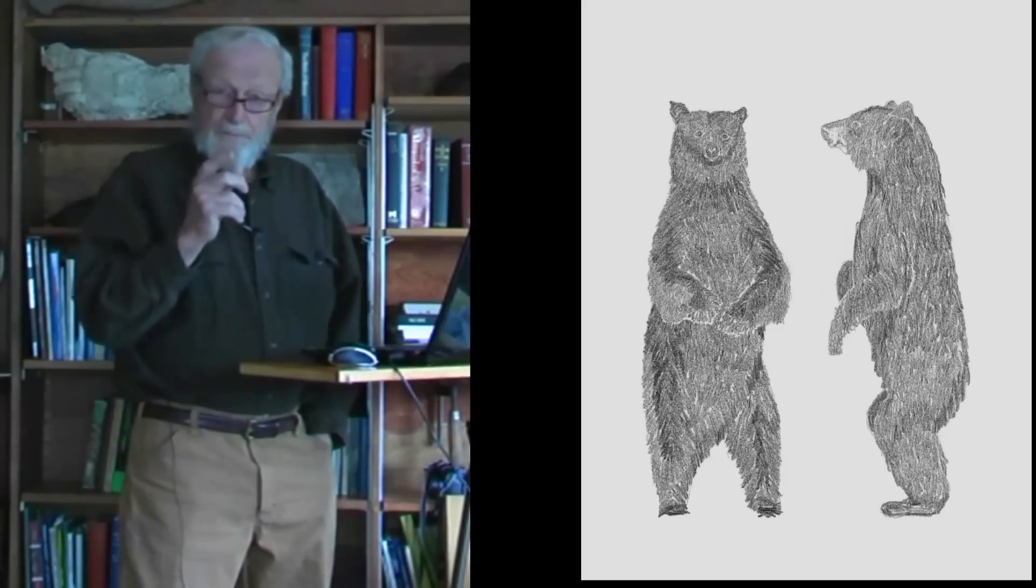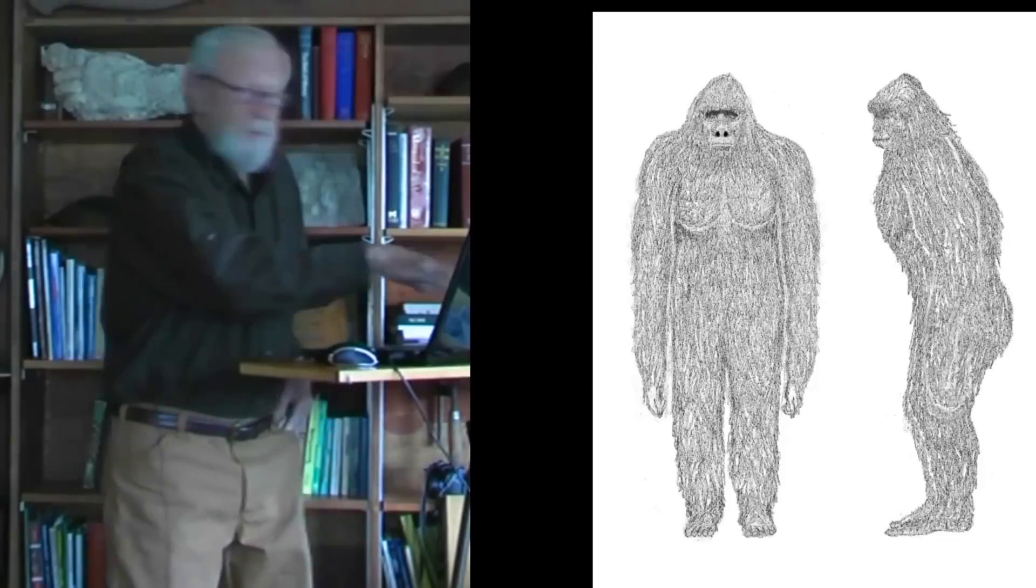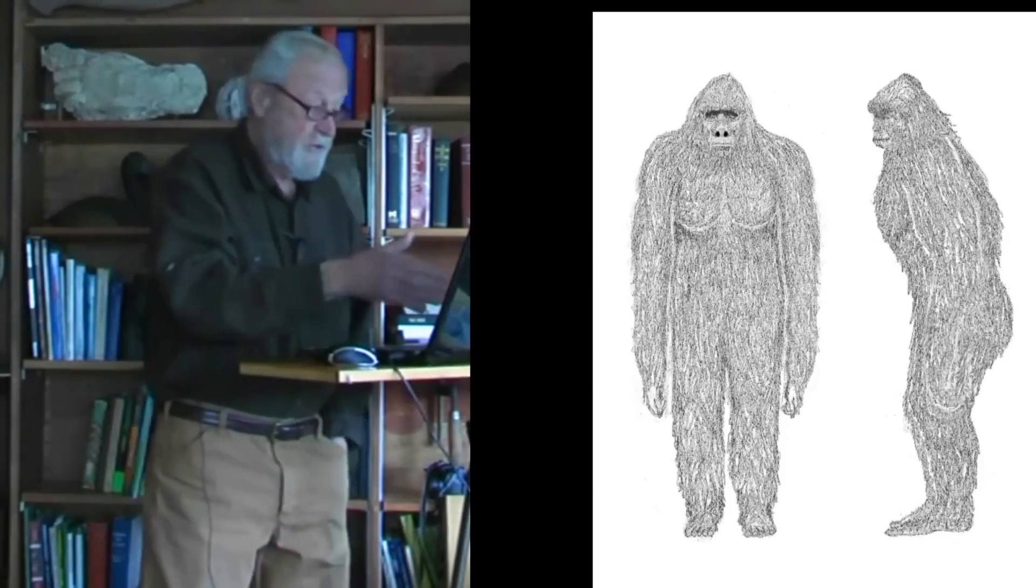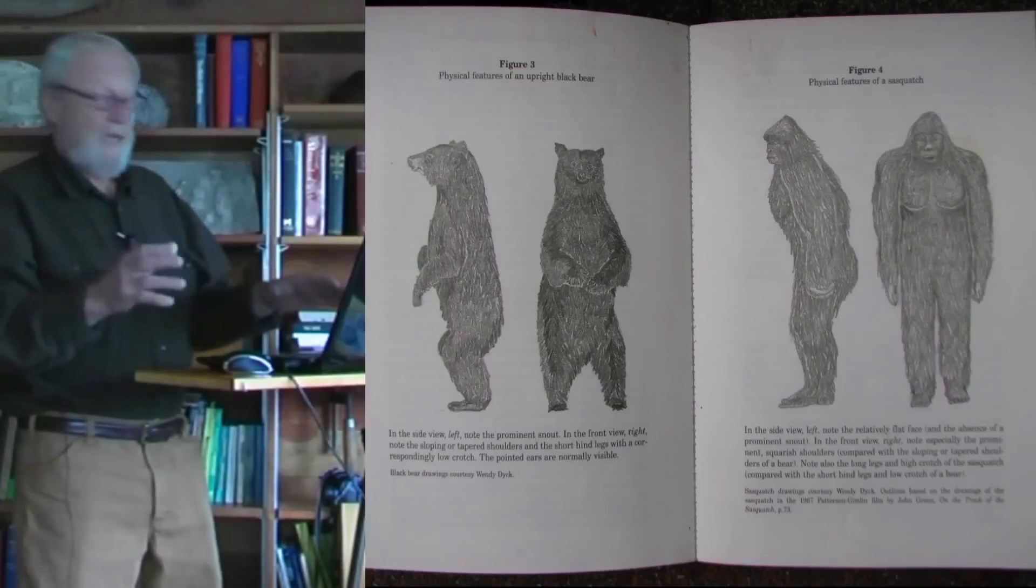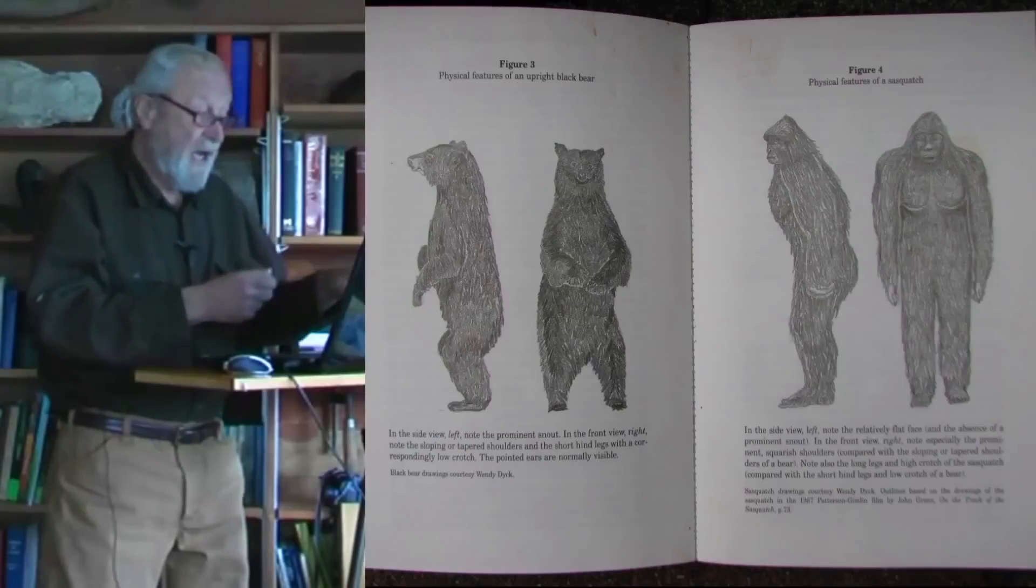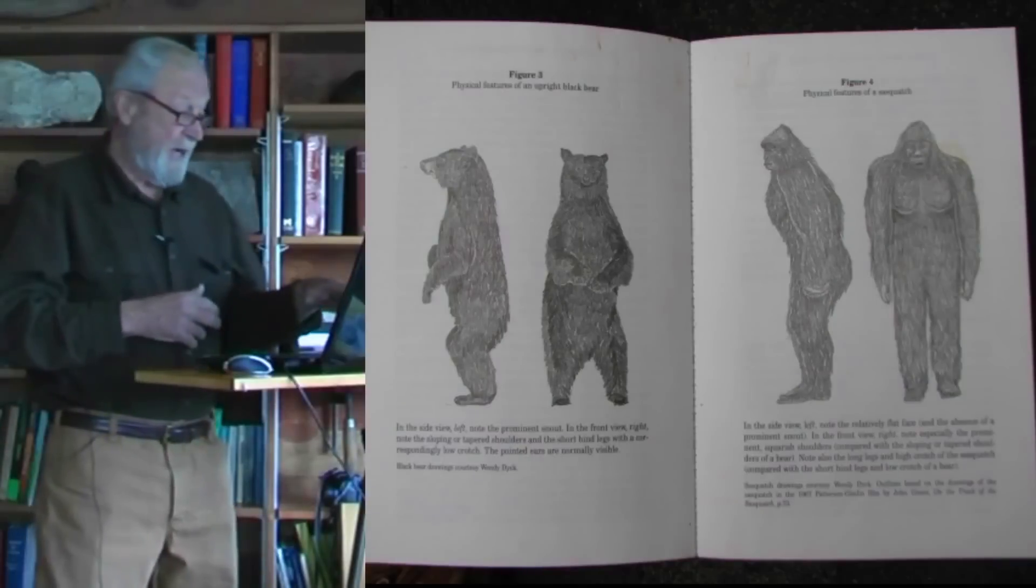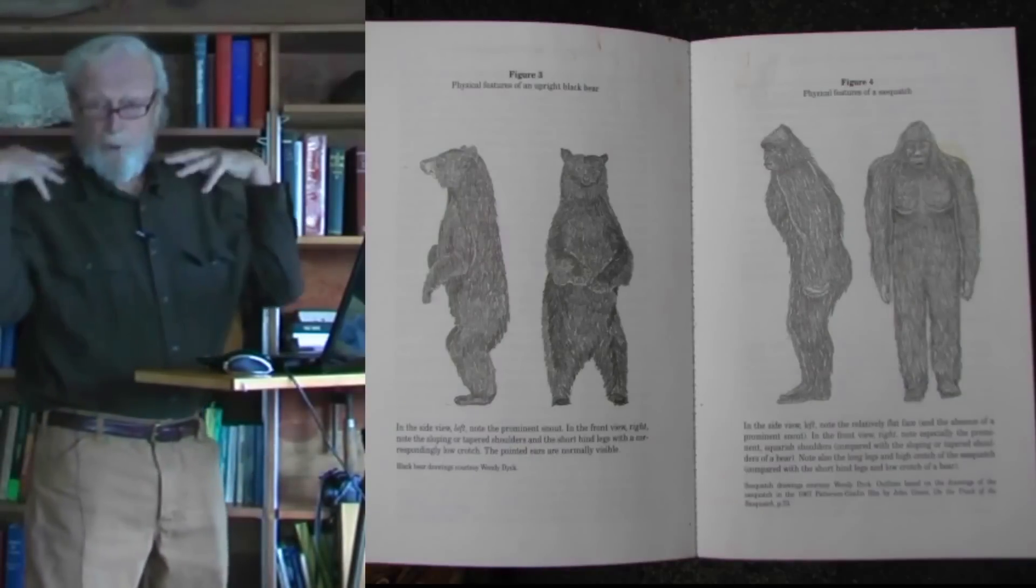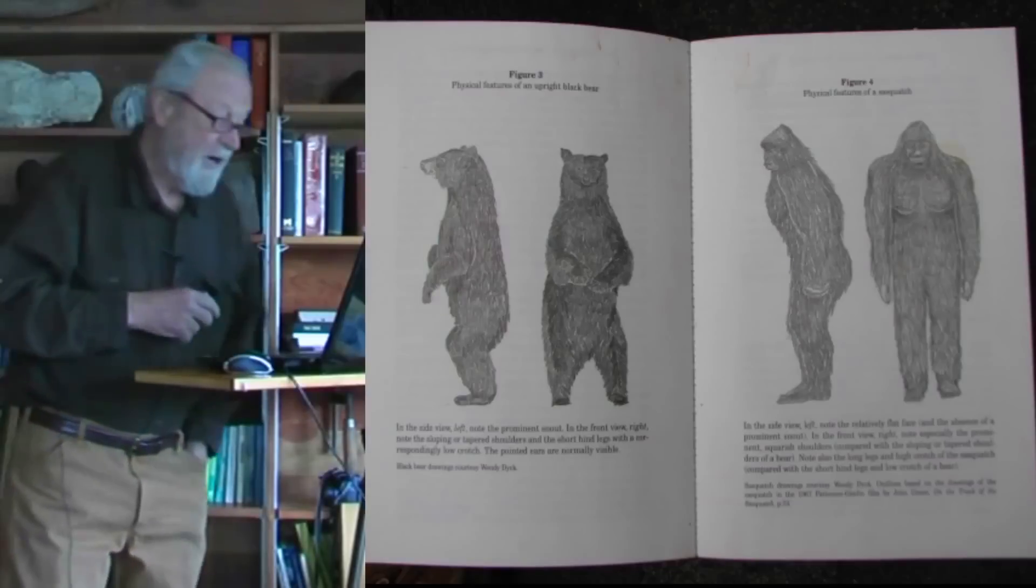What's missing from our field guides, still today, is this image of a Sasquatch, front view and side view, which really needs to be on a facing page with an upright bear so we can see that the Sasquatch has a flat face, not the prominent snout of the bear. The Sasquatch has broad shoulders, which although it makes it appear much more human-like, certainly makes it much less bear-like.